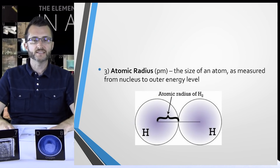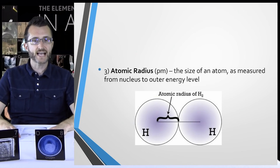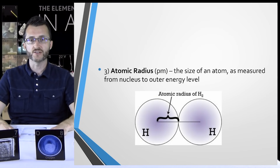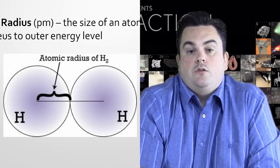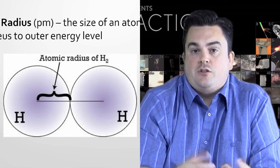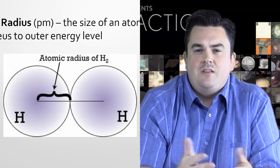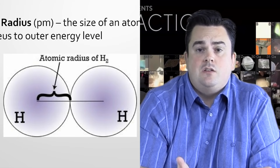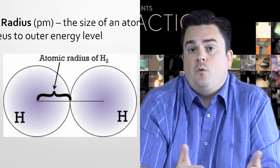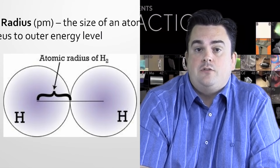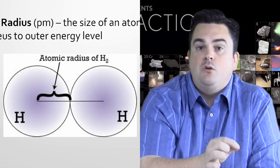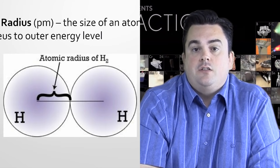Atomic radius, measured in picometers — the size of an atom as measured from nucleus to outer energy level. Just like the radius of a circle is from the center to the actual line of the circle, the center of an atom is the nucleus. The outermost part of any atom is always the valence electrons. So the atomic radius is the distance from the nucleus to those valence electrons.